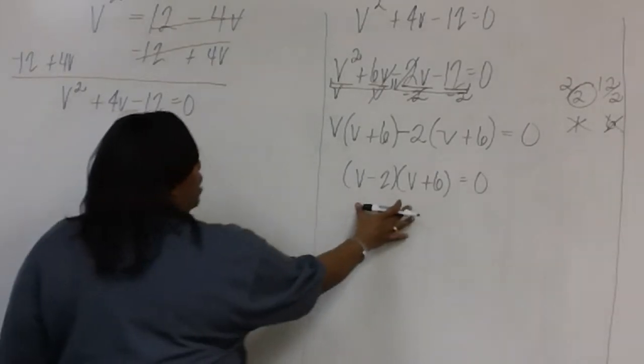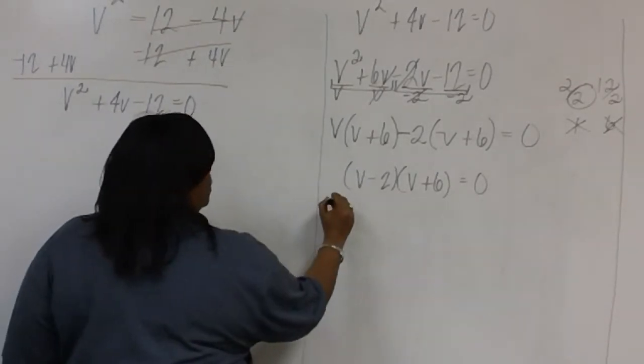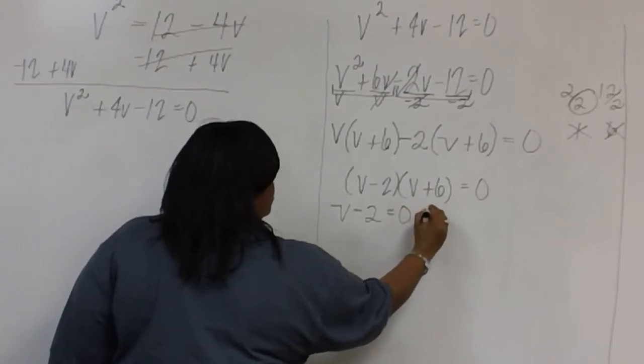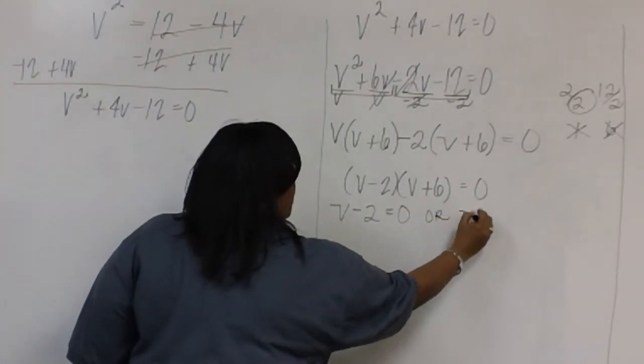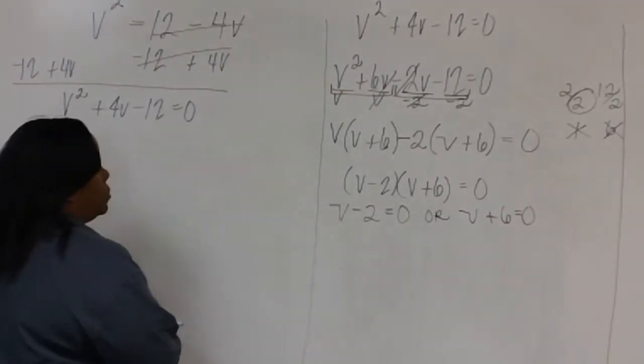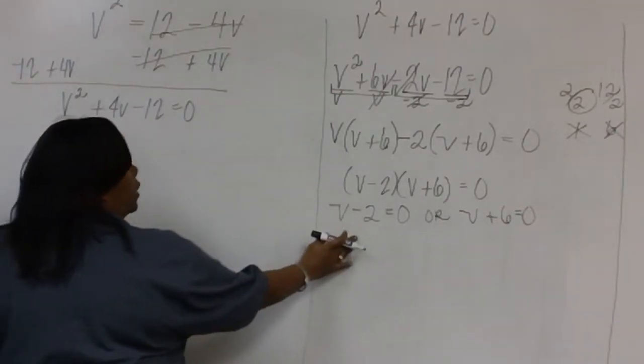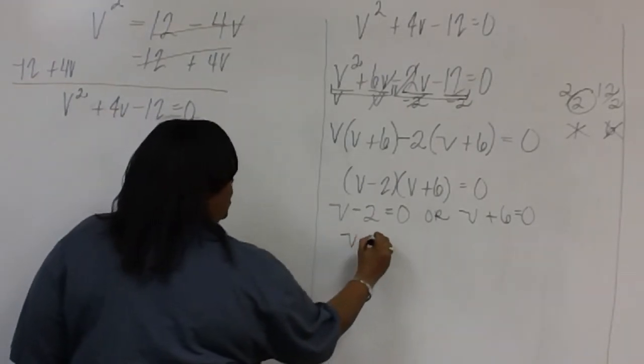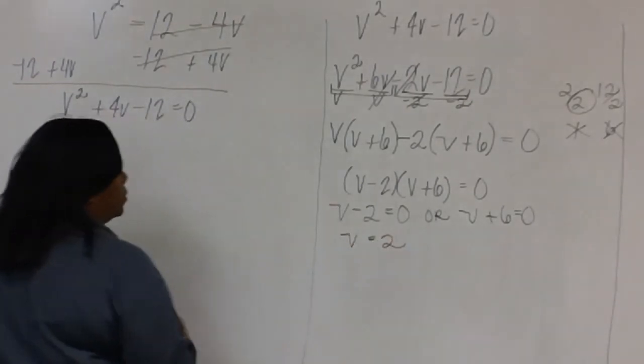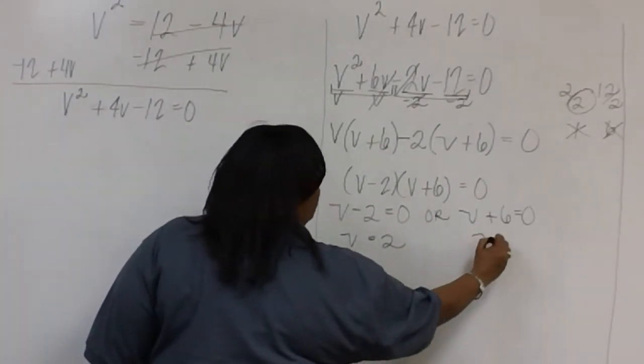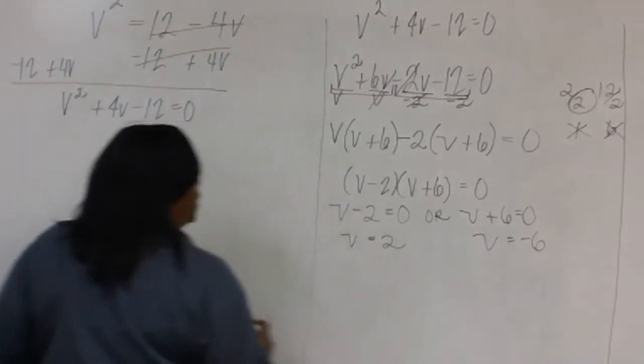Now we can write our two equations. V minus 2 equals 0, or V plus 6 equals 0. Solving the first equation, we have V equals 2. Solving the second equation, we have V equals negative 6.